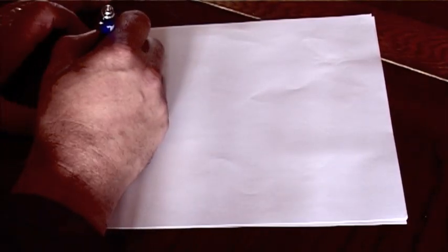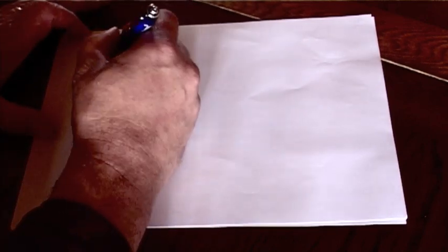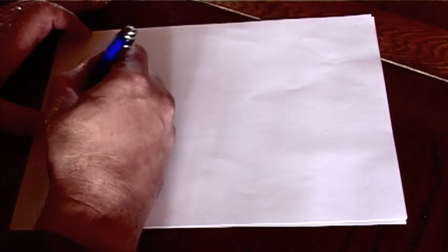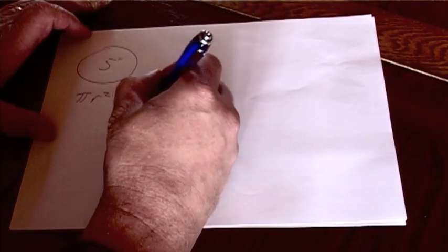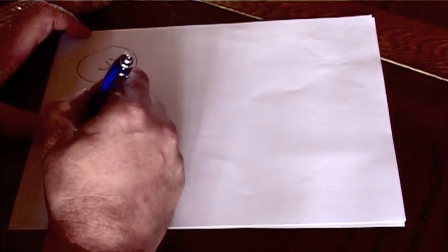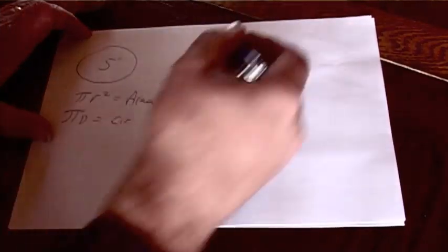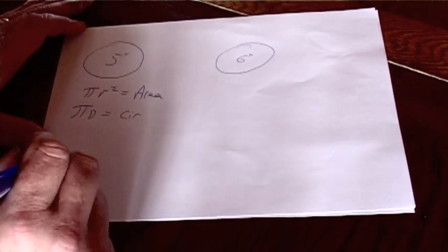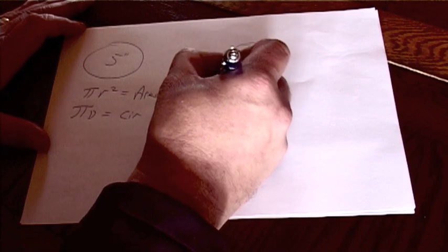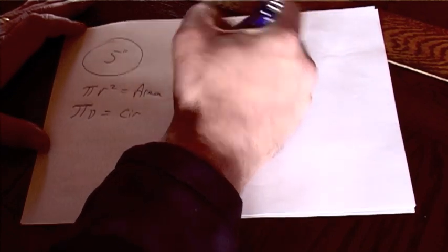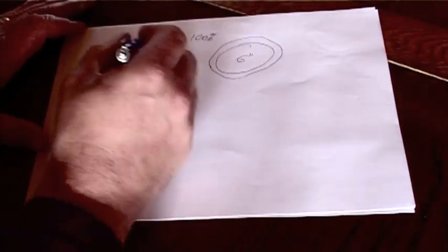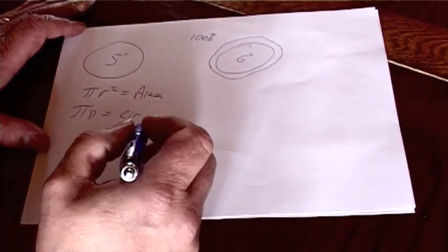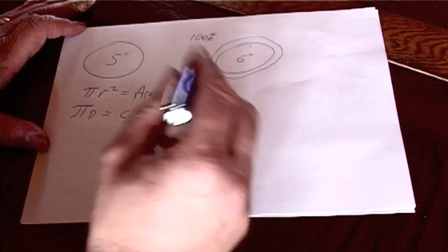Alright here we are at the bench and we've looked at some 5 inch blades before and we've used the formula pi r squared which gives you the area. And pi d which gives you the circumference. And then the 6 inch blade which is the same mathematics.